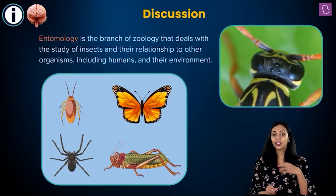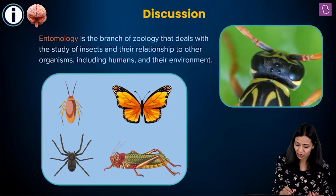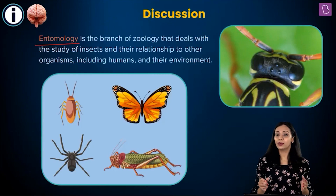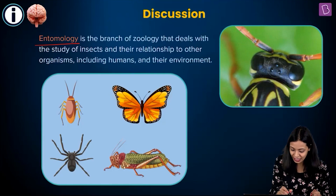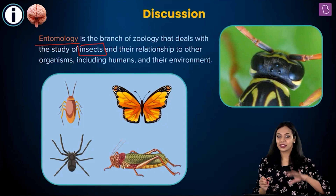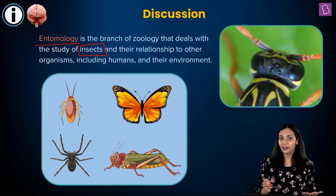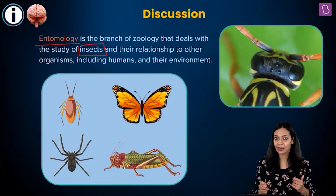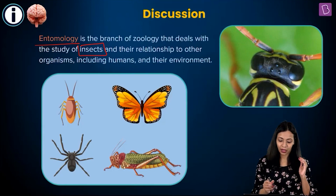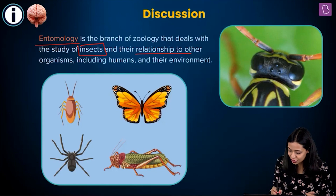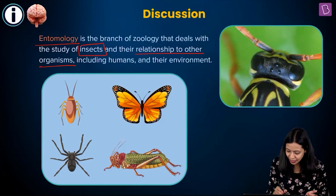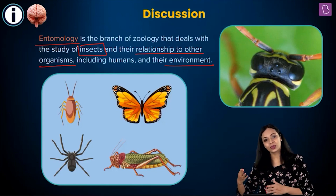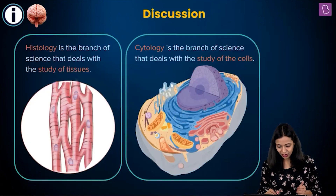The other option was entomology. Entomology is a branch of zoology that deals with the study of insects — their behavior and how they interact with other biotic and abiotic components, including the relationship with other organisms and their environment.